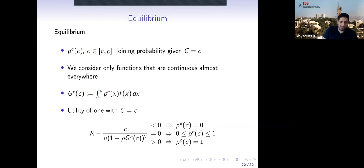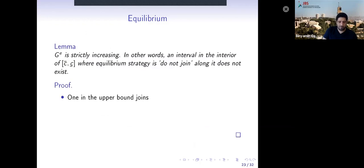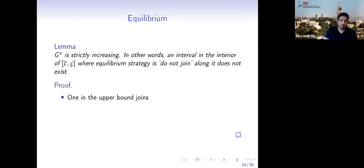The equilibrium conditions: a customer with cost c has net utility given by r minus c times the waiting time of a zero-priority customer, where the proportion overtaking them is G(c). For p(c) to be an equilibrium: if net utility is negative, p(c)=0; if strictly positive, p(c)=1; and if zero (indifference), p(c) can be anything between zero and one. The first result: in equilibrium, no customer joins with probability zero — everyone joins with some strictly positive probability.